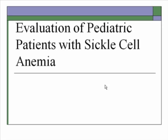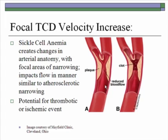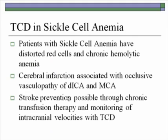In the evaluation of pediatric patients with sickle cell anemia, transcranial Doppler has made a significant difference in both evaluation and management. Sickle cell anemia creates changes in arterial anatomy with focal areas of narrowing which impacts flow similarly to atherosclerotic narrowing. There is potential for thrombotic or ischemic events. Patients have distorted red blood cells and chronic hemolytic anemia — low hematocrit and viscosity — so they typically have a higher normal mean flow velocity than patients without sickle cell anemia. Cerebral infarction associated with occlusive vasculopathy of the distal internal carotid and MCA is common.